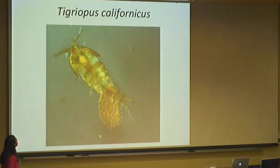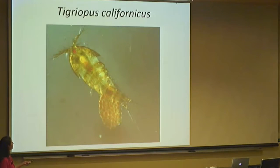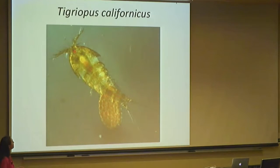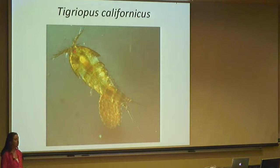This is Tigriopus californicus, the copepod I'm working on in the Kelly Lab. It's a small intertidal species that lives in tide pools. This is a female — she's got a big egg sack here and one little red eye at the top of her head. They're pretty small, about two to three millimeters, and most of the work we do with them is under a light microscope, so this is taken under magnification.